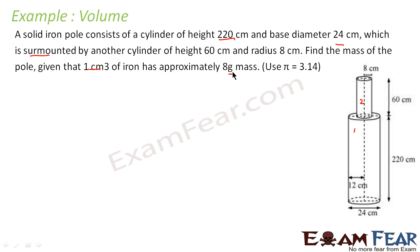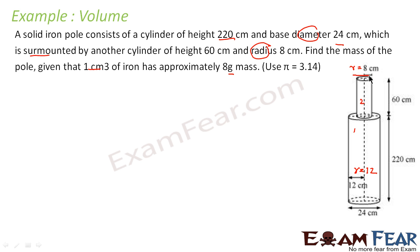The first thing to do is find the volume of the whole figure in cm³. Since 1 cm³ = 8 grams, if the volume is x cm³ then the total mass is 8x grams. Note that for the large cylinder the diameter is 24 cm so the radius is 12 cm, while for the small cylinder the radius is given directly as 8 cm. Always work with radius only.